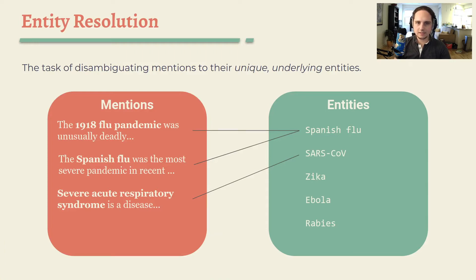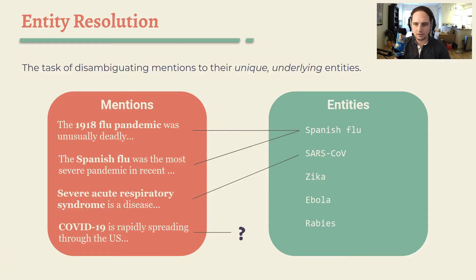Entity resolution is the task of resolving mentions to their unique underlying entities. This is commonly done through the usage of an entity linker, a supervised model that links mentions to a fixed set of entities. While these models have improved considerably in performance over the past few years, they are limited in that they can only resolve mentions of entities known ahead of time, and thus fail as mentions of new entities begin to appear in text.